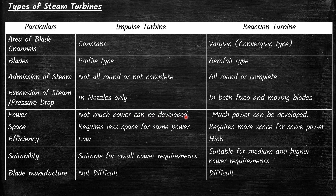Regarding power: not much power can be developed in the impulse turbine, whereas much power can be developed in the reaction turbine. Regarding space: the impulse turbine requires less space for the same power, while the reaction turbine requires more space. Regarding efficiency: it is very low for the impulse turbine; the reaction turbine efficiency is high because expansion happens in different stages. Regarding suitability: the impulse turbine is suitable for small power requirements, while the reaction turbine is suitable for medium and high power requirements. The blade structure of the impulse turbine is comparatively simple and easy to construct, but in the case of the reaction turbine it is very difficult to construct.